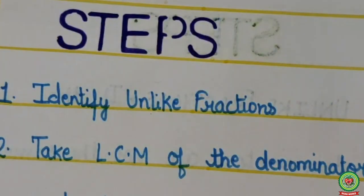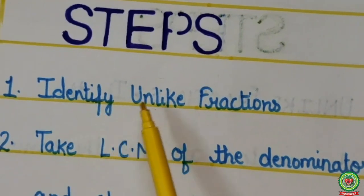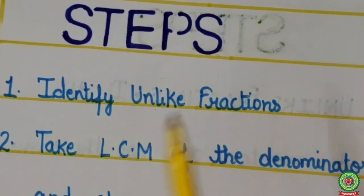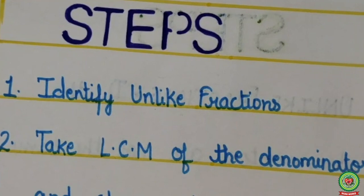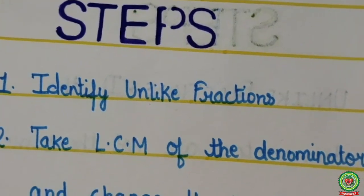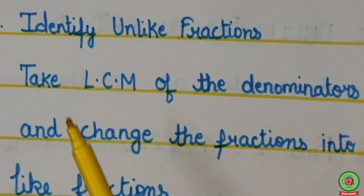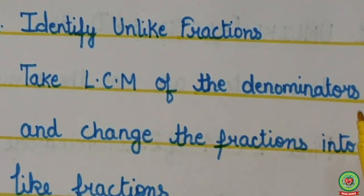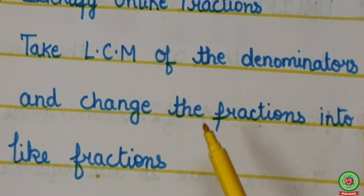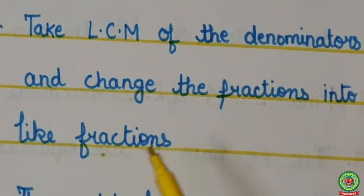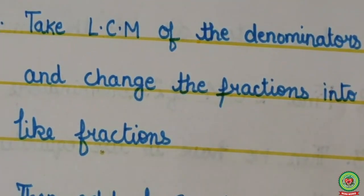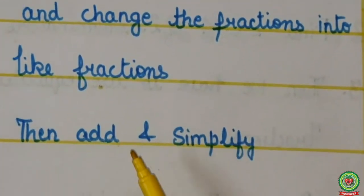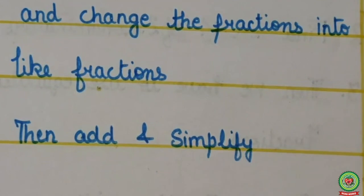The steps we have to follow are: Step 1, identify unlike fractions — we will check whether fractions are unlike or not. Step 2, take LCM of the denominators and then change the fractions into like fractions. At the last, add and simplify.